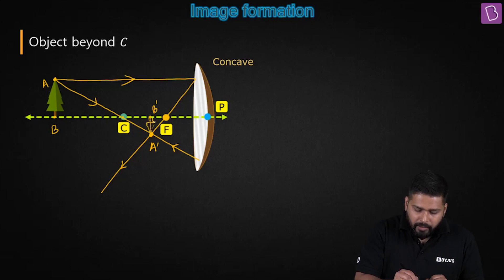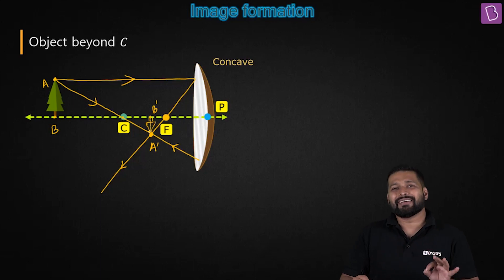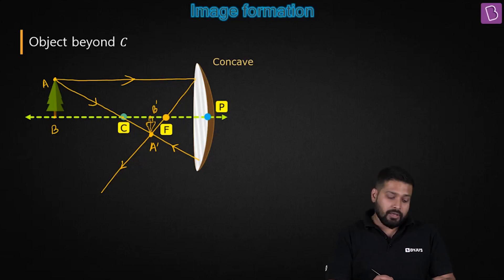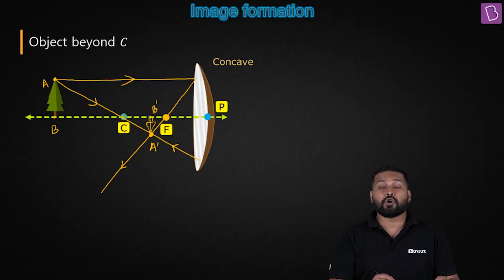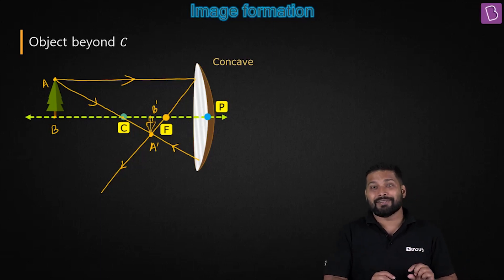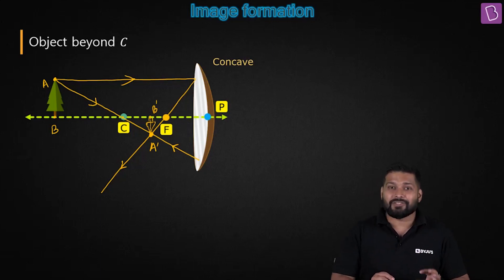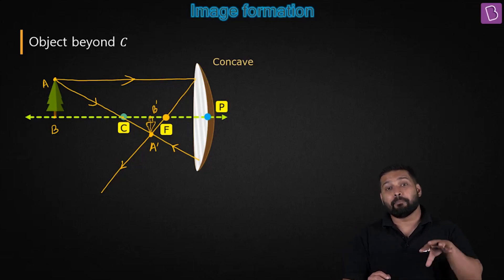This is how you get an image. What about the nature of the image? Is it upright or inverted? Certainly it is inverted. Are the rays actually meeting? Yes, so it is a real image. Is it the same size, smaller, or larger? If it is smaller we say it is diminished, and if it is larger we say it is magnified.